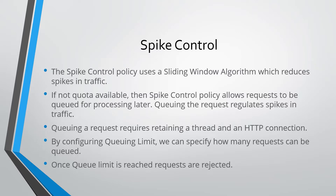We specify how many requests can be queued. Each queued request needs a thread and retains the HTTP connection, so this is an expensive process. We specify the queuing limit — how many requests can be queued — and once the queue limit is reached, requests start getting rejected.